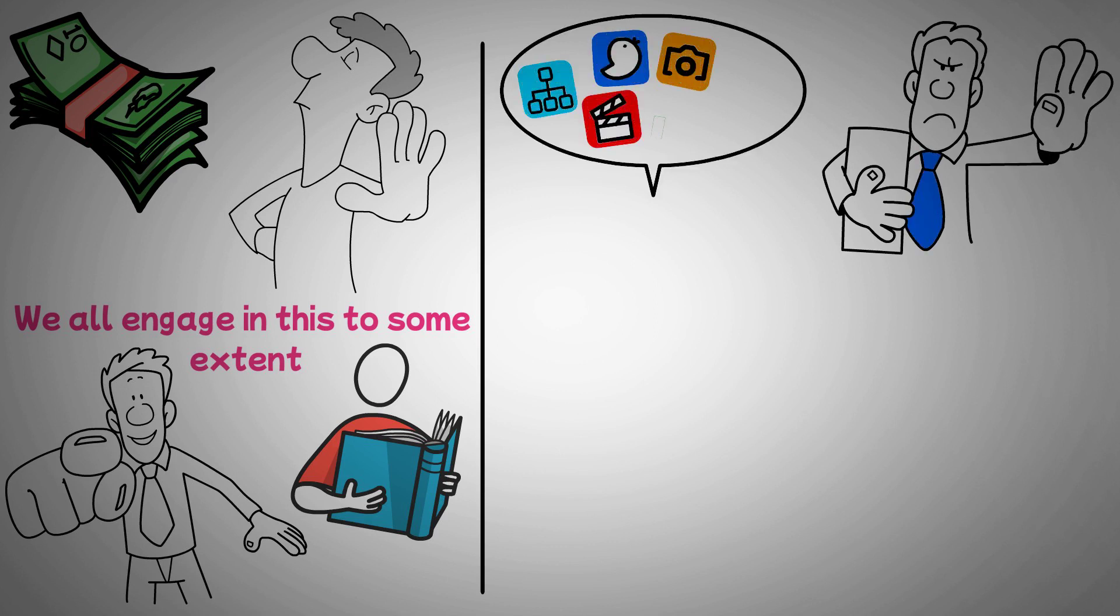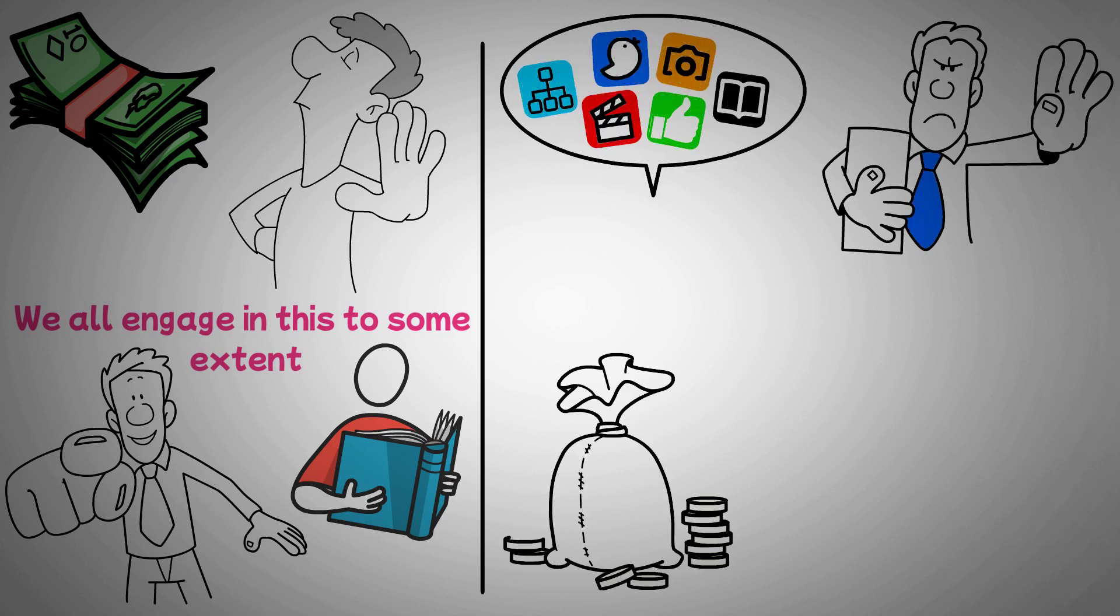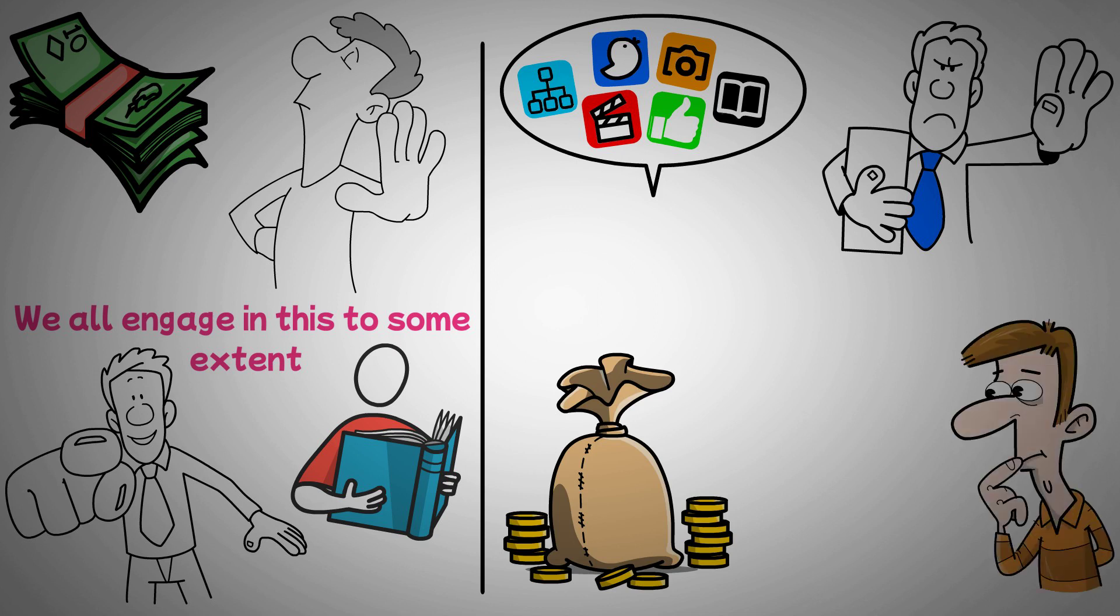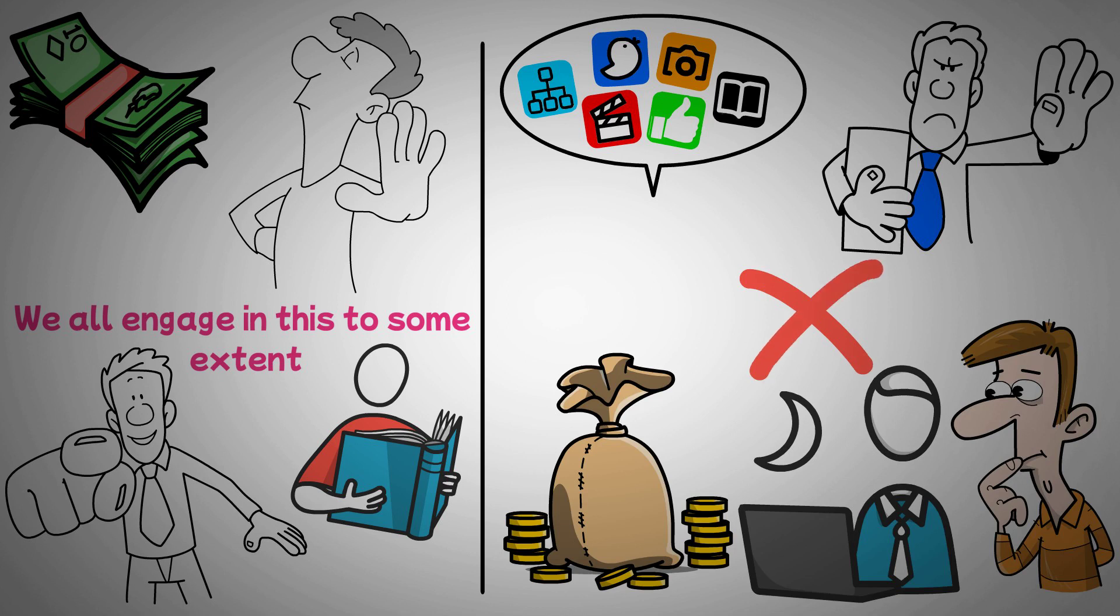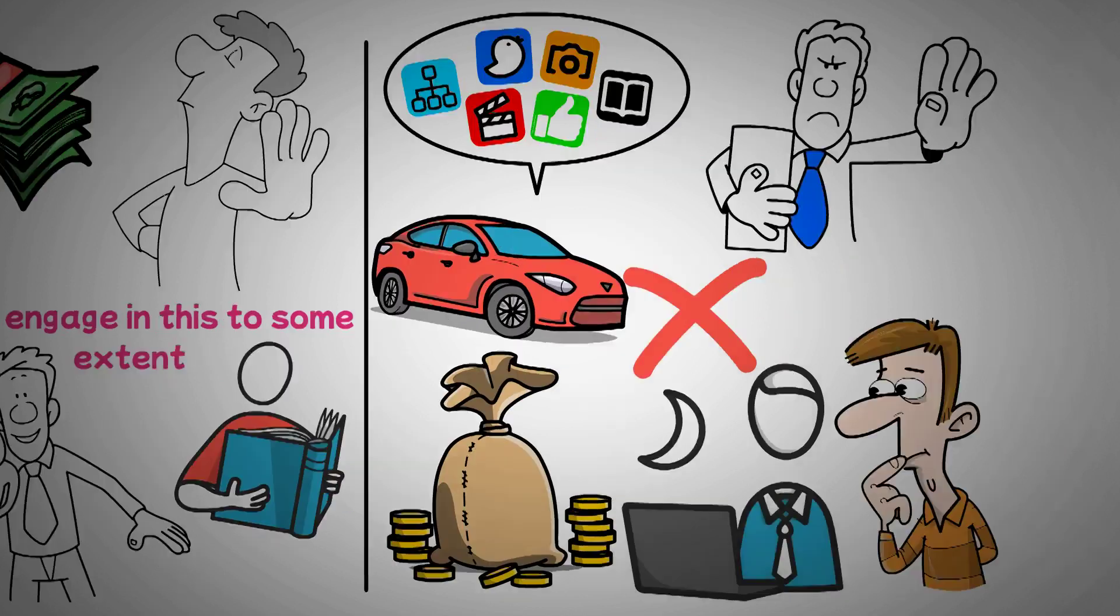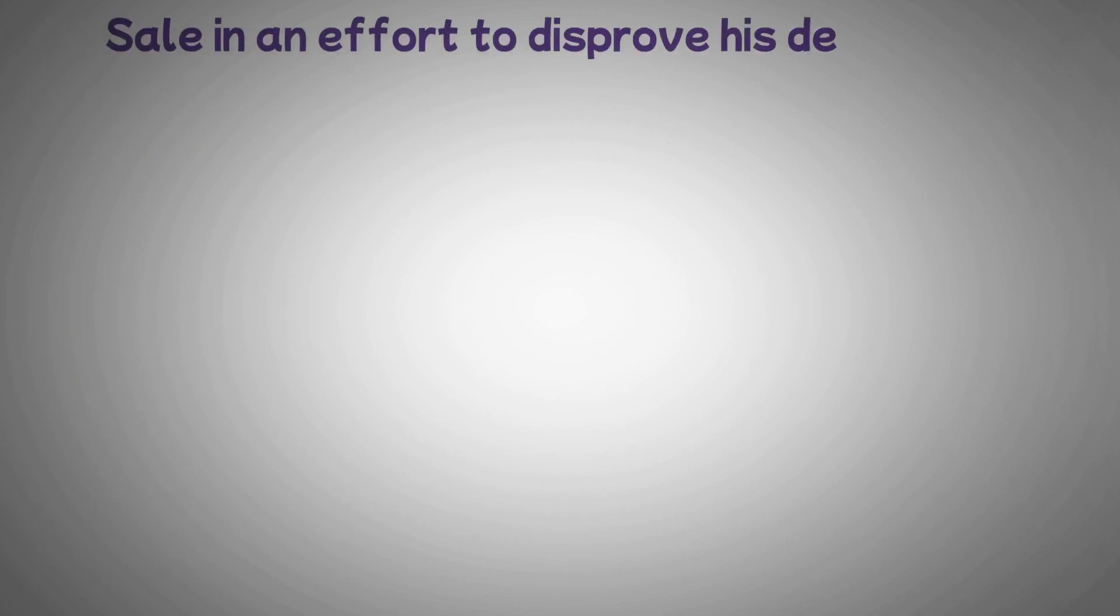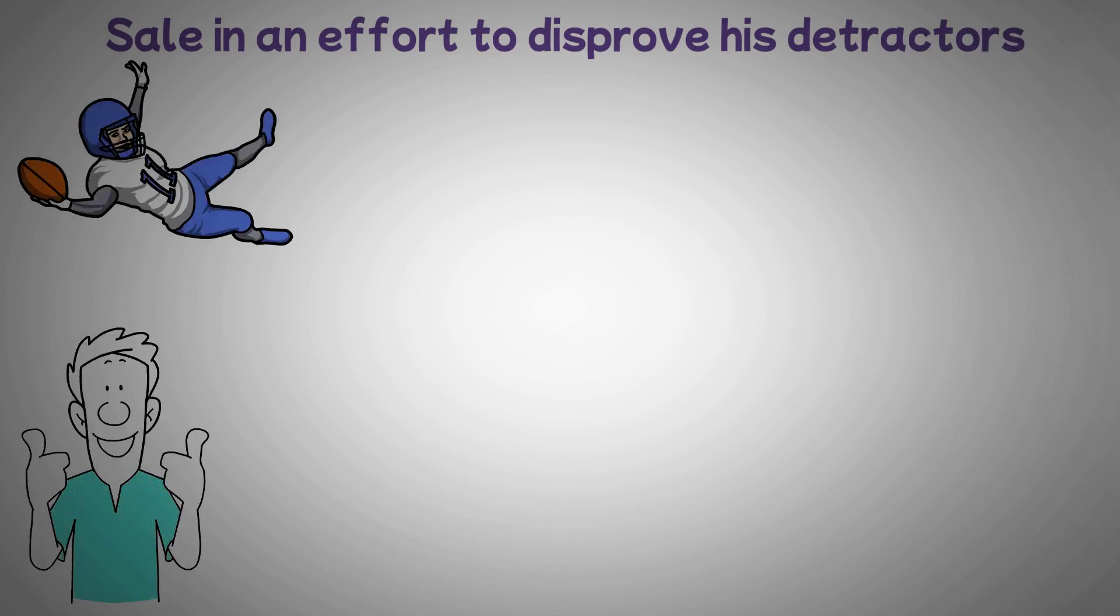Overspending is also a result of social media. Huge sums of money are spent by those who want to appear wealthy but aren't. An internet business owner, for instance, who is told he would never succeed, might purchase a pricey car after he makes his first significant sale in an effort to disprove his detractors. However, this method of making an impression is an endless staircase.